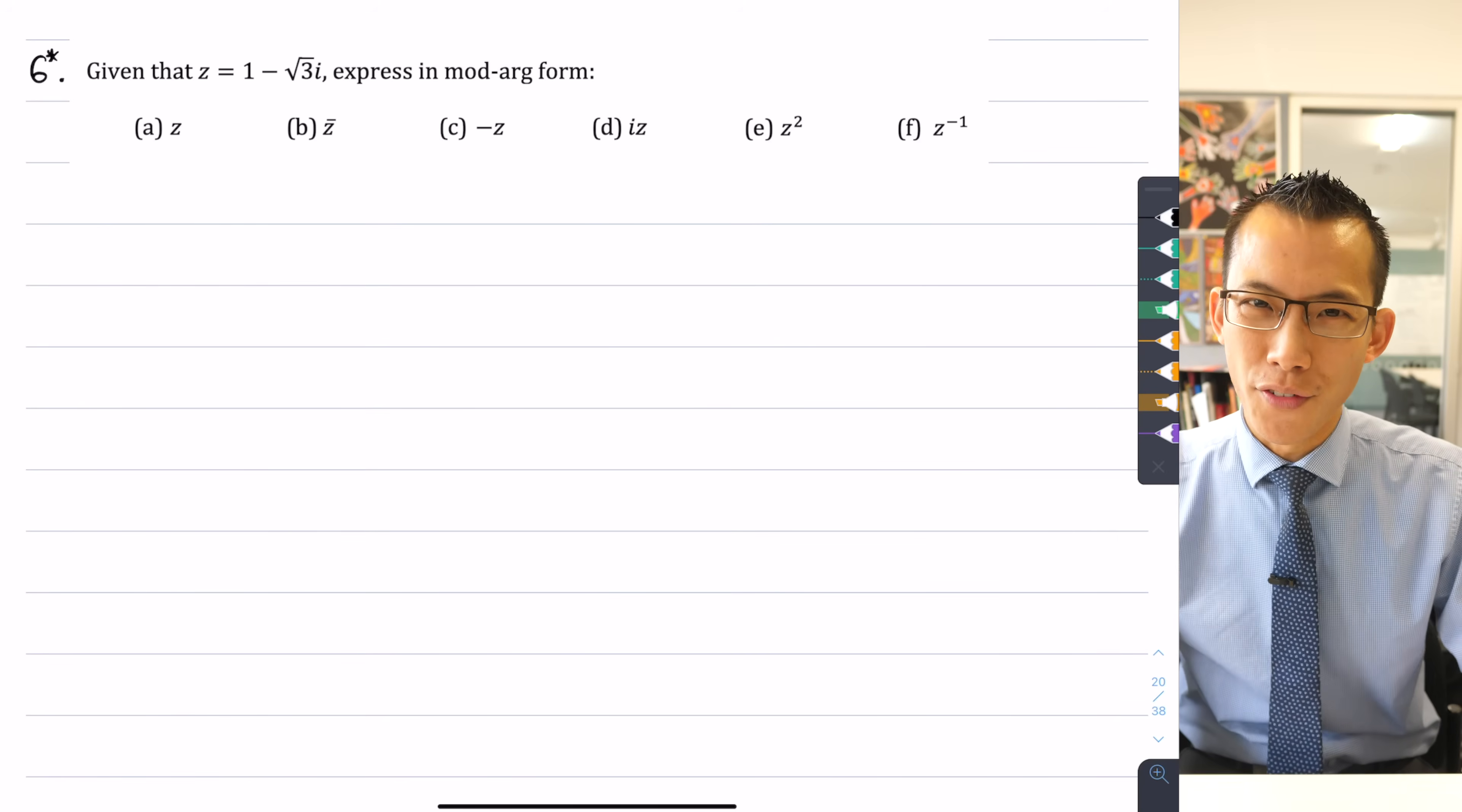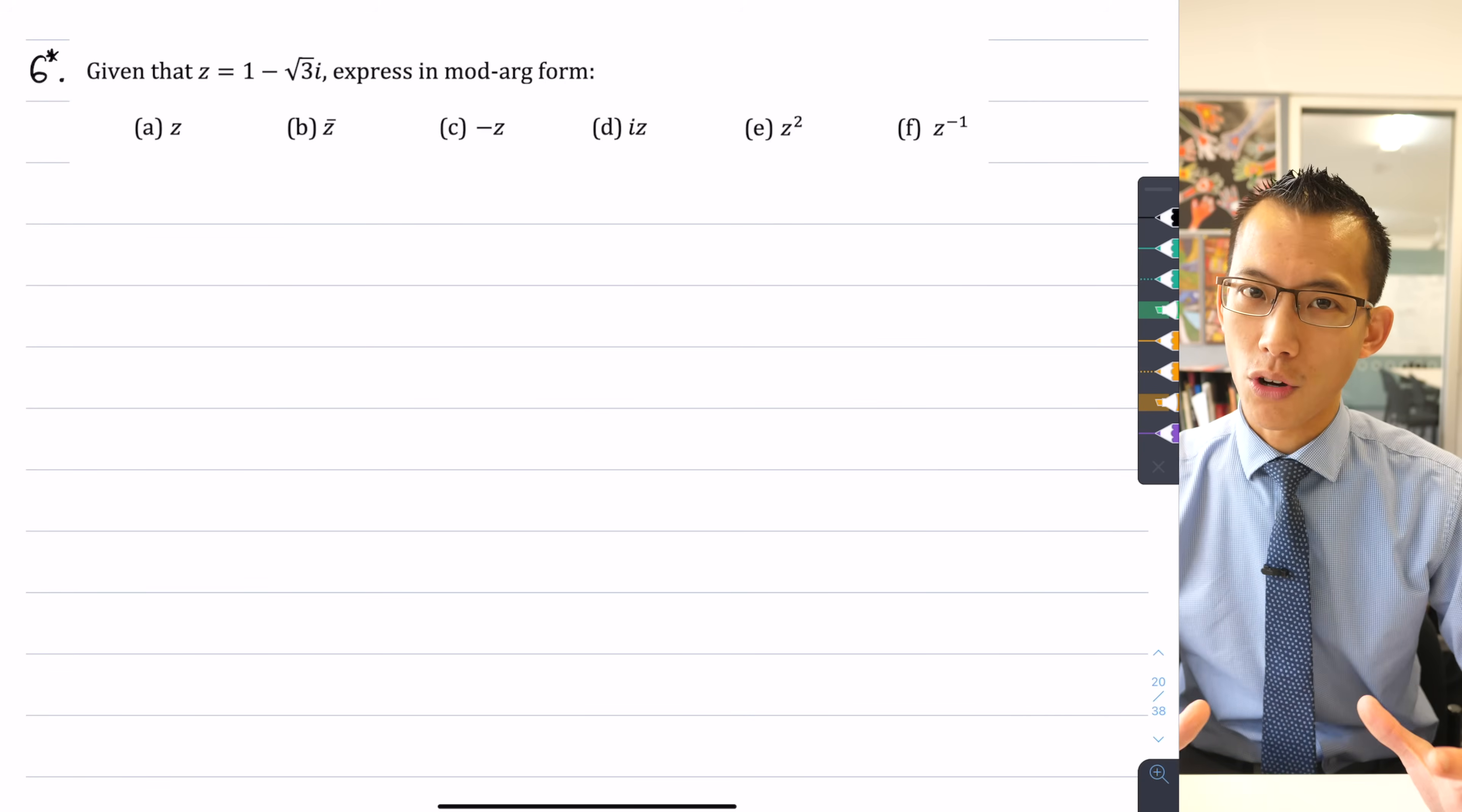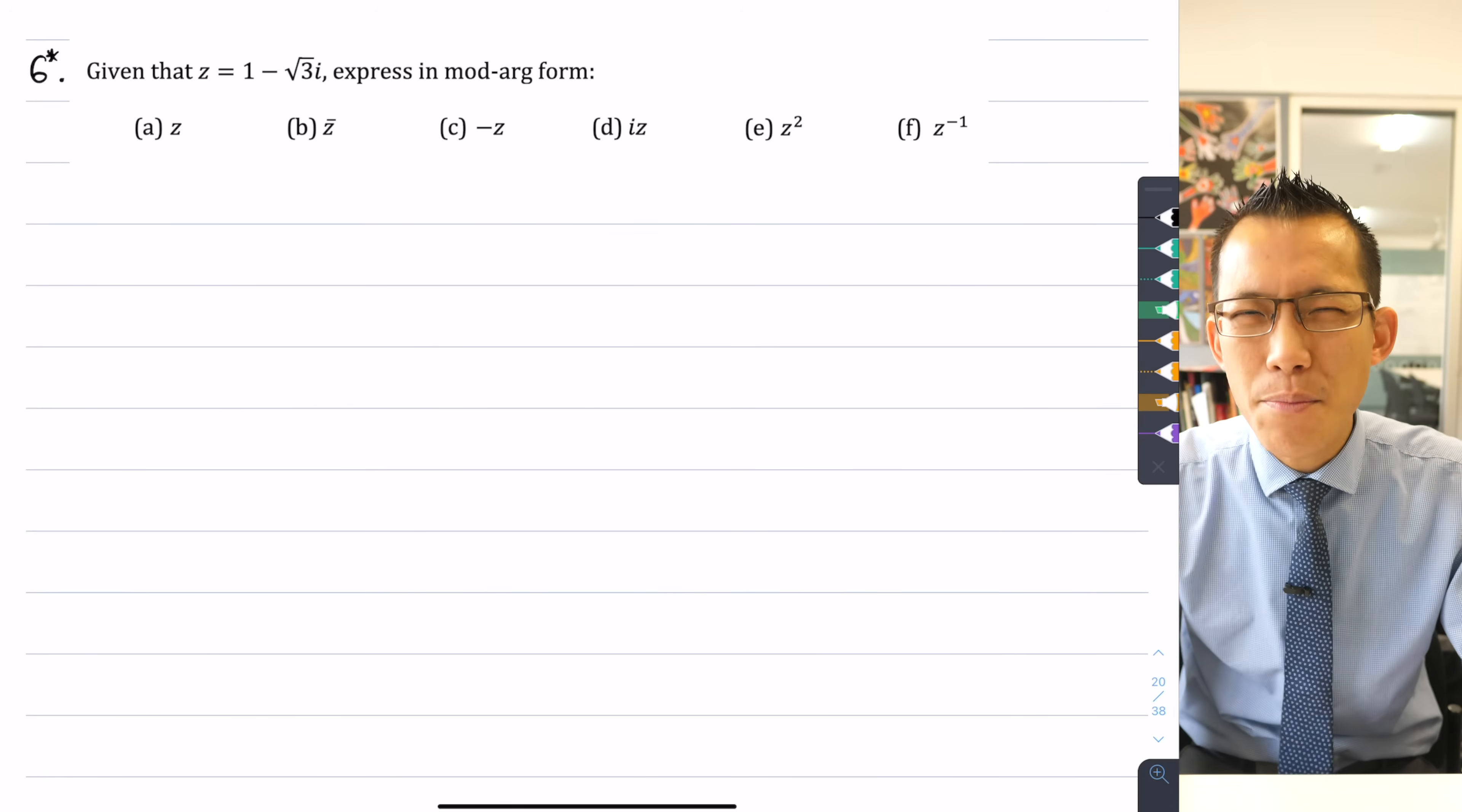Now that we know about the polar form of a complex number, or mod arg form as it's sometimes called, we can use it as a really powerful instrument to understand complex numbers on the complex plane. We're already starting to think about the visuals of how these numbers exist in a two-dimensional space, and mod arg form, polar form will help us understand what's going on even better.